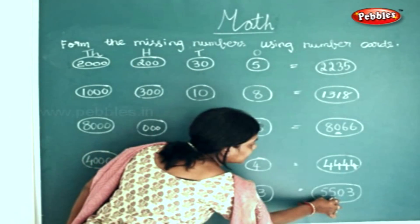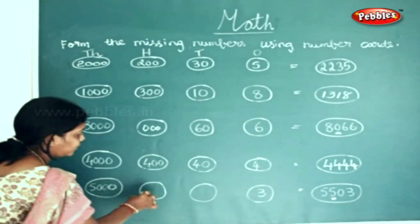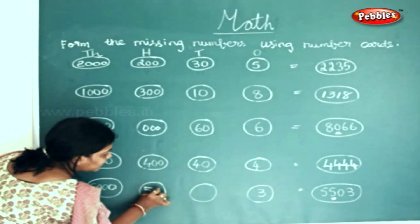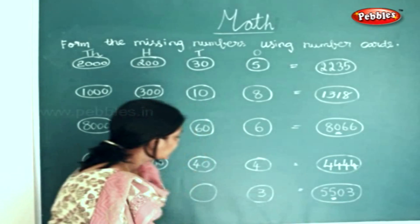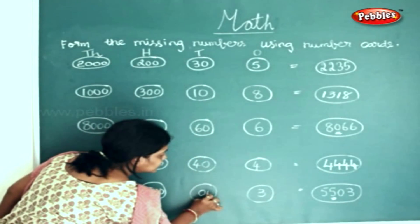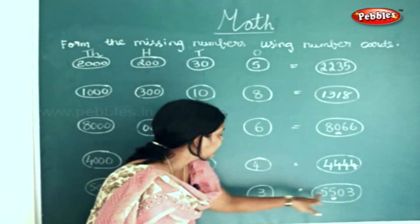So what do you have in the hundreds place? You have 5, so we will write 500. And what do you have in the tens place? You have a 0, so we will write 0. And the 3 is already given here.